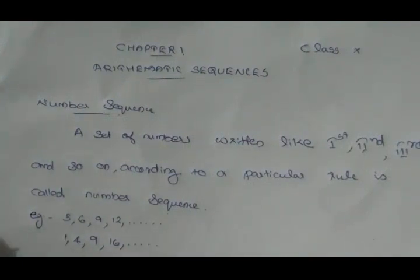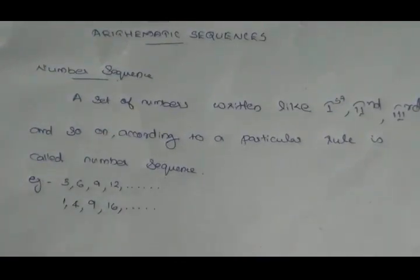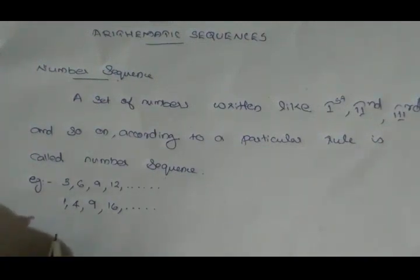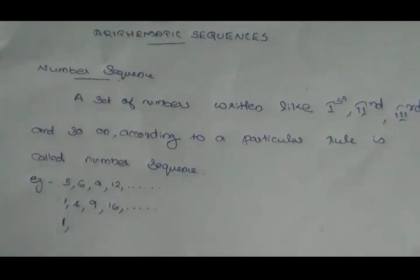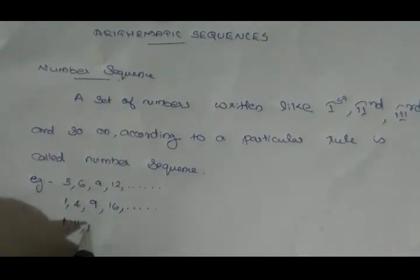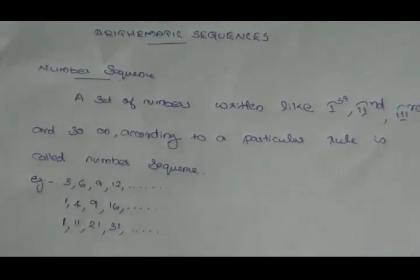Let's take a look at the number sequence: the set of natural numbers ending with 1. We have a sequence of all such numbers: 11, 21, 31, etc. This is a number sequence.